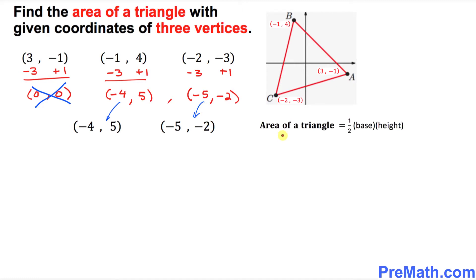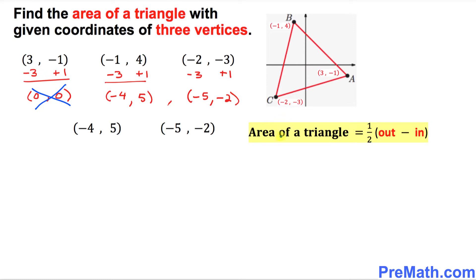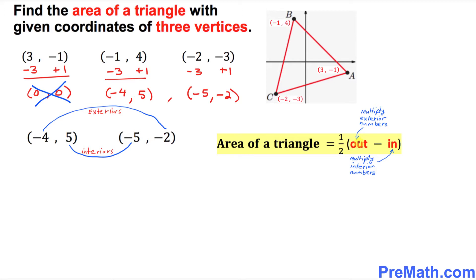We know the area of a triangle formula is one-half times base times height, but in our case we don't know the base or height values, so we are not going to use that formula. Instead, we use: Area = one-half times (out minus in), where 'out' means multiplying the exterior numbers and 'in' means multiplying the interior numbers.